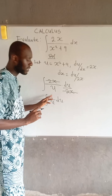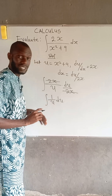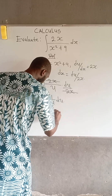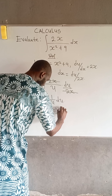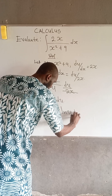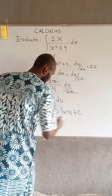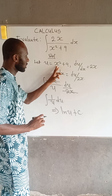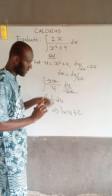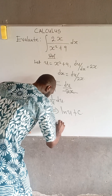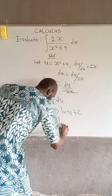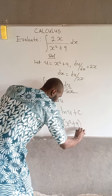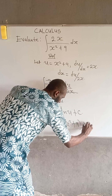The integral of 1 divided by u is ln(u), so this gives us ln(u) plus C. Substituting back, u equals x squared plus 9, so therefore we have the answer: ln(x squared plus 9) plus C.